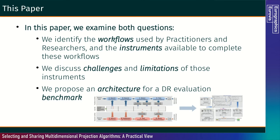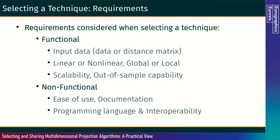In this paper we examine both questions. We identify the workflows used by practitioners and researchers and the instruments available to complete these workflows. We discuss the challenges and limitations of those instruments, and we propose an architecture for a DR evaluation benchmark. In terms of requirements when selecting a technique, we have functional requirements such as the type of input data, linearity or non-linearity, globality or locality, and scalability or out-of-sample capability.